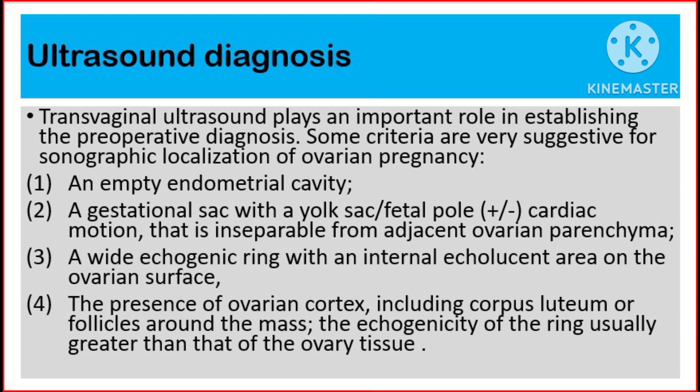Number 1: An empty endometrial cavity. Number 2: A gestational sac with a yolk sac or fetal pole with or without cardiac motion that is inseparable from adjacent ovarian parenchyma. Number 3: A wide echogenic ring with an internal echolucent area on the ovarian surface.